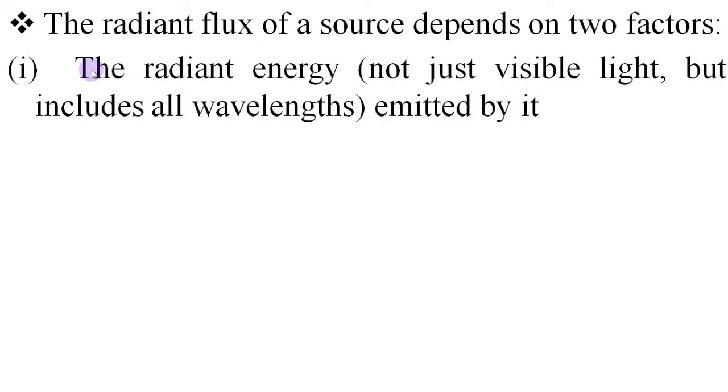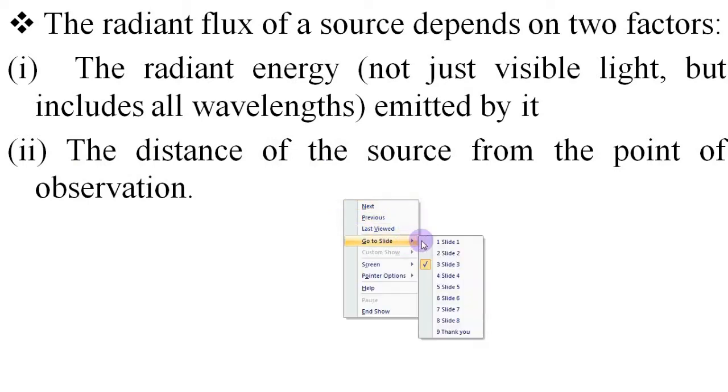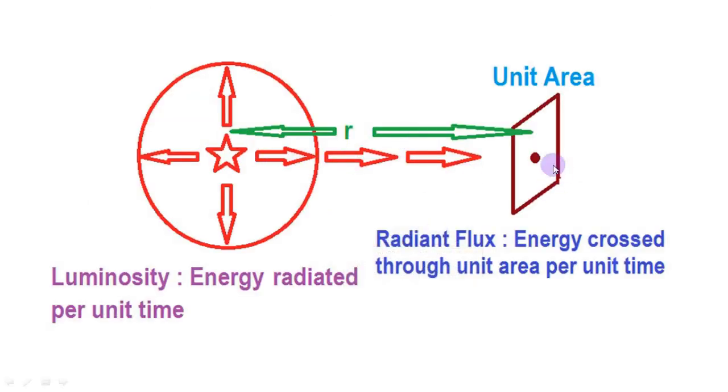The radiant flux of a source depends on two factors. Number one, the radiant energy emitted by it. Here, radiant energy means energy radiation of all wavelengths, not just visible light. And number two, the distance of the source from the point of observation. To understand this, again we see the figure. The radiant flux at that point depends on the distance from the source and the point, that means, this value of r.